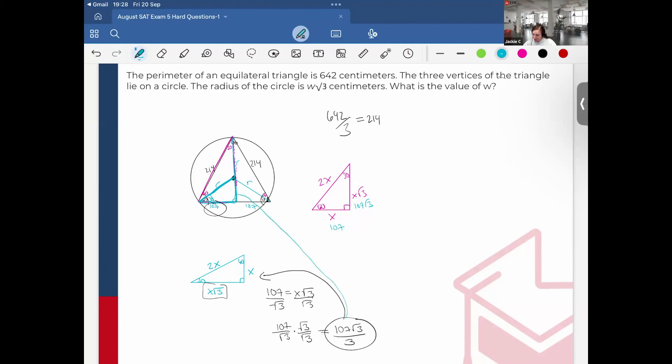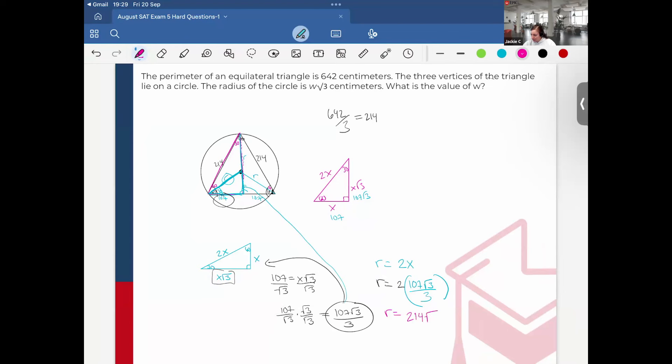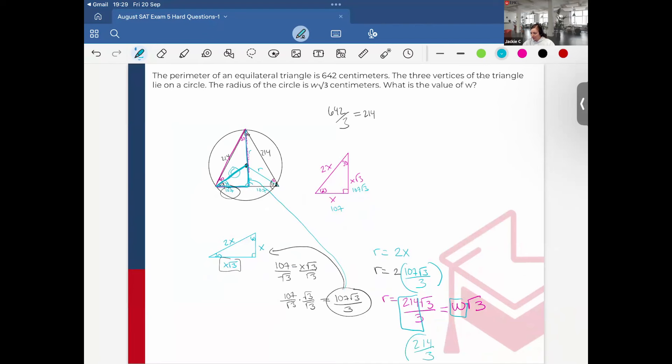And remember I said that the radius is equal to 2x. Final step, I just need to do 2 times 107 root 3 divided by 3. And this will tell me the radius of the circle, which is equal to 214 root 3 divided by 3. And this is all equal to w root 3. So I can see my w value is just 214 divided by 3. Wasn't that so amazing? Great journey of the 30-60-90 triangle.